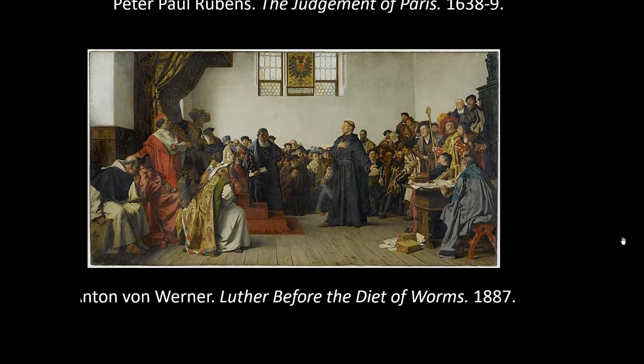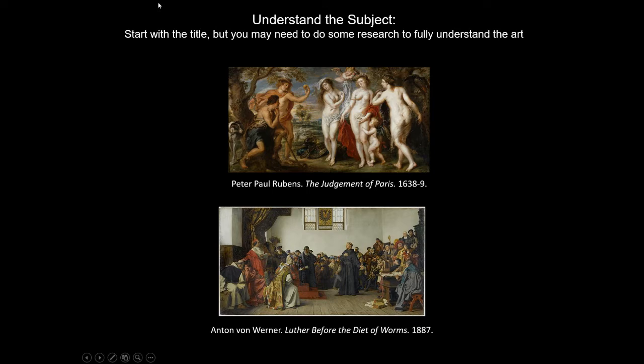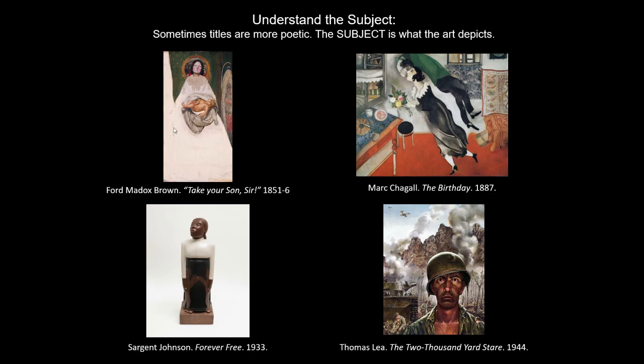Similarly here, the subject as indicated by the title is Luther Before the Diet of Worms. 'Diet of Worms' makes you think of someone eating earthworms — that's not the subject. Luther refers to Martin Luther, the monk who is going to be excommunicated by the Roman Catholic Church. A diet refers to a particular meeting or council, and Worms is a city in Germany. If you were to write a paper on this, you would need to look up some historical information. Even though the title gives us a subject, we still have to do a little digging.